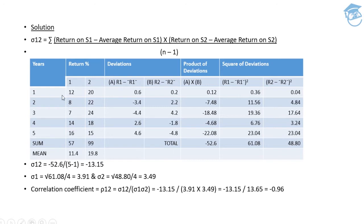For these five years, I jot down my returns: 12, 8, 7, 14, and 16 for security one, years one through five. For security two: 20, 22, 24, 18, and 15. The sum for security one is 57, for security two it's 99. So 57 divided by 5 gives average return of 11.4, and 99 divided by 5 gives average return of 19.8.